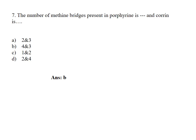The number of methane bridges present in porphyrin is dash and corin is dash. Answer Option B, 4 and 3. Methane bridges for porphyrin 4, for corin 3.